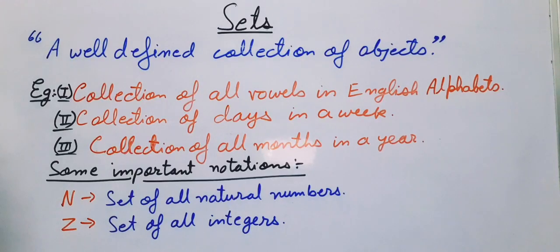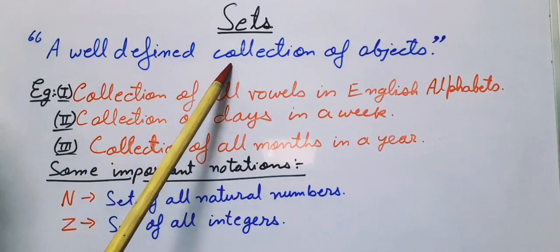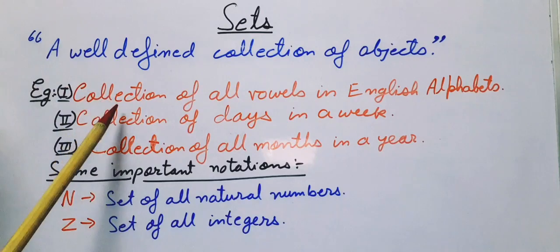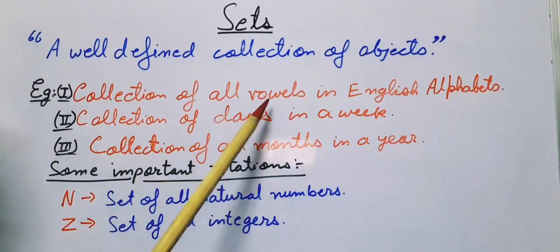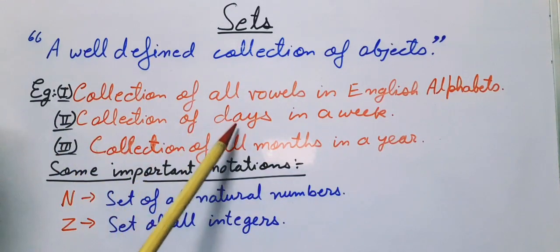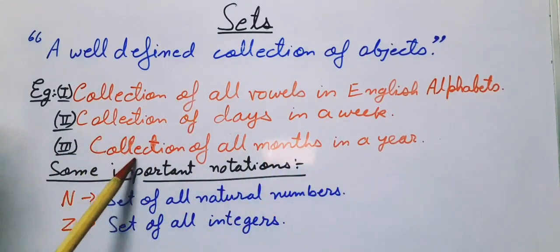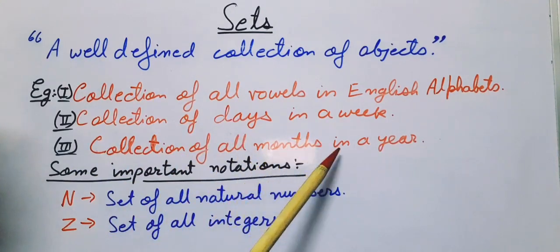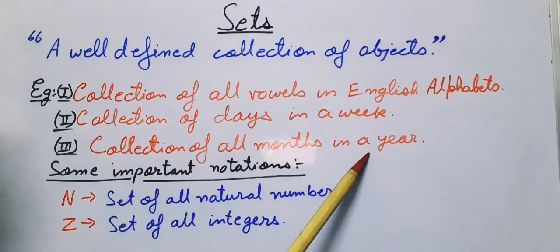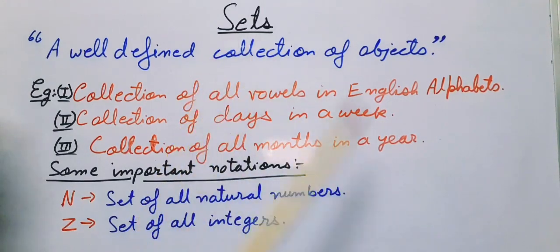Hello everyone, today we will discuss sets. First of all, what is a set? A set is a well-defined collection of objects. For example, collection of all vowels in English alphabets, collection of days in a week, collection of all months in a year—these are all examples of sets.